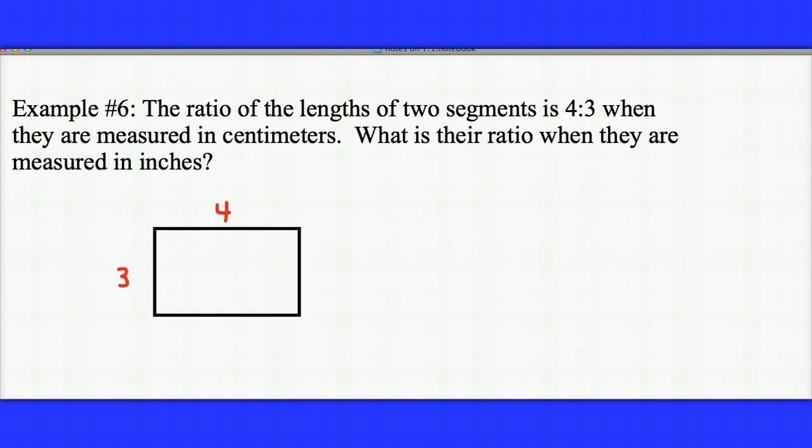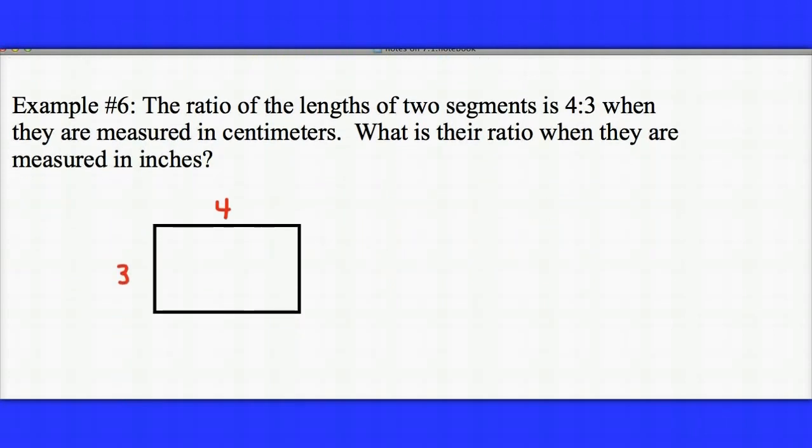Let's take a look at this last example. The ratio of the length of two segments is 4 to 3 when they are measured in centimeters. What is the ratio when they are measured in inches? Well, me choosing to measure these lengths in centimeters or inches doesn't change how long they are. So if the original ratio when we measured them in centimeters was 4 to 3, when we measure them in inches, the lengths are still going to be in a ratio of 4 to 3.